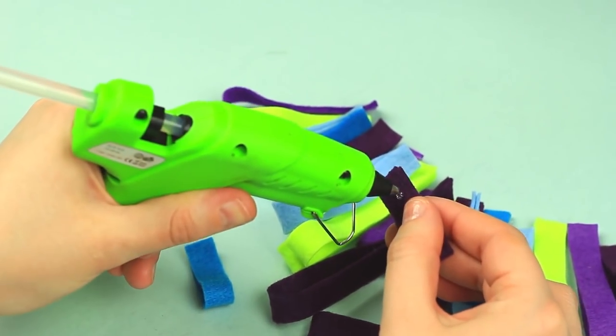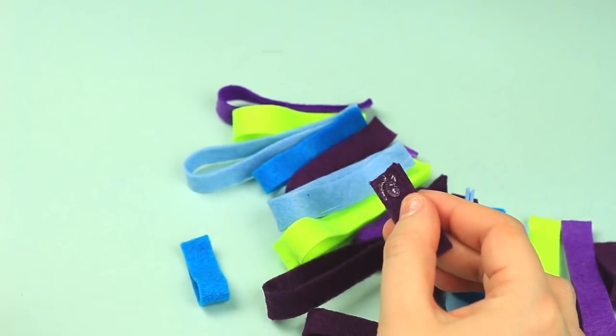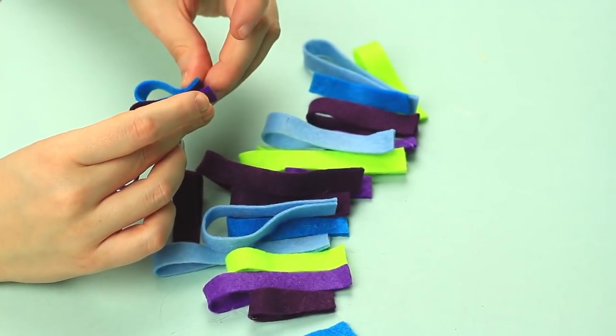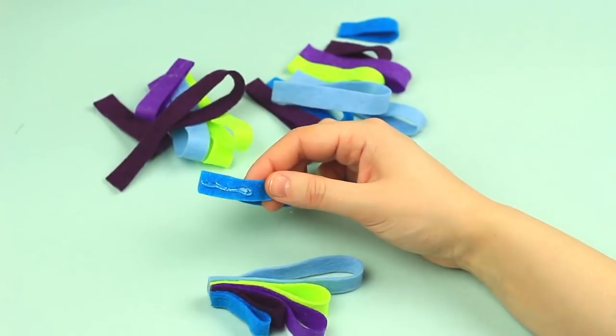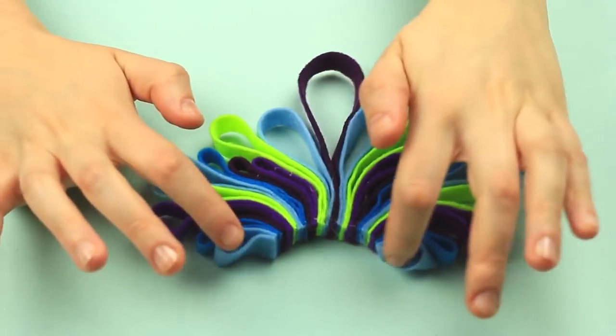Let's attach all the felt details to form a necklace. Hot glue the loops one by one, alternating size and color. Align the elements to look neat.